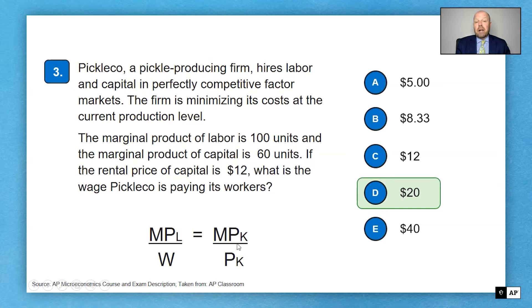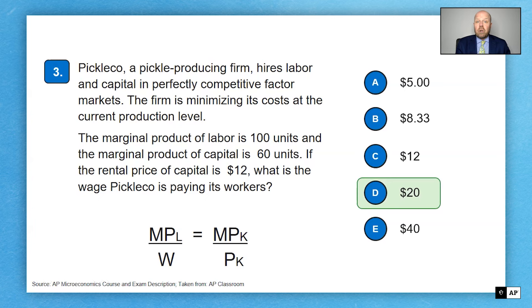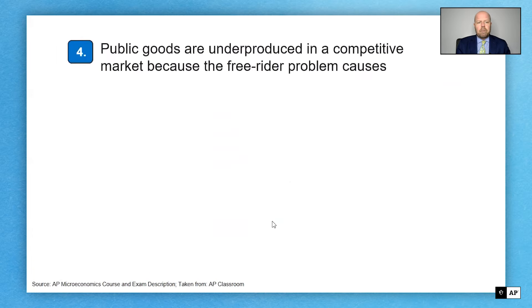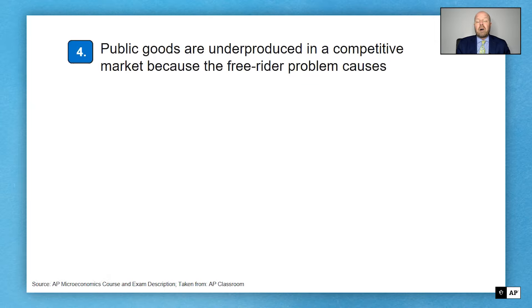One additional thing to watch for: if the marginal product of labor divided by the wage is greater than the marginal product of capital divided by the price of capital, you'd use more labor. Whichever ratio is higher, use more of that input until diminishing returns brings them back into equality.